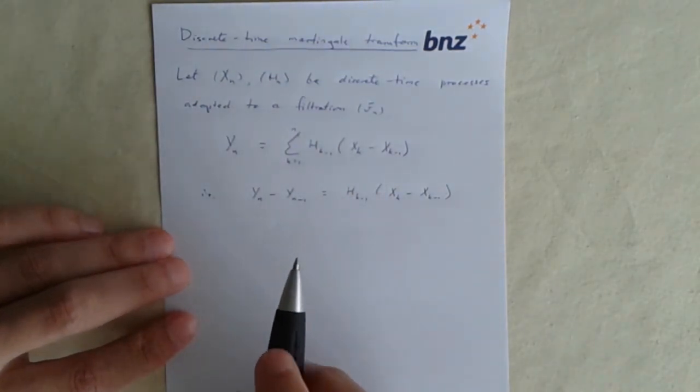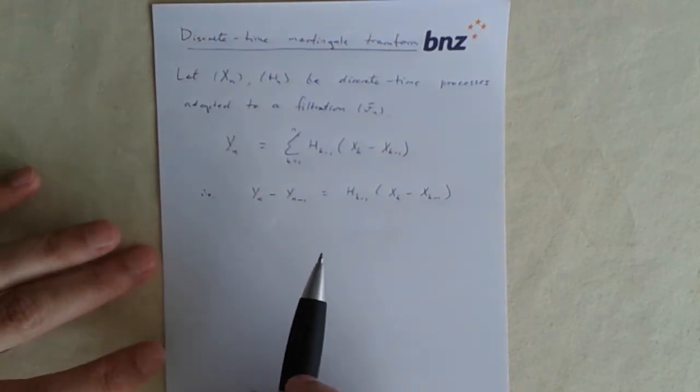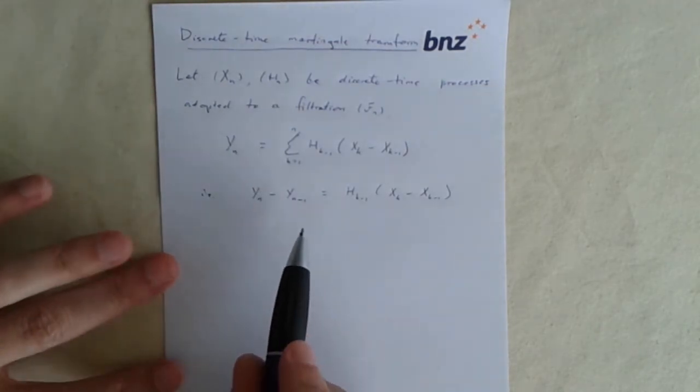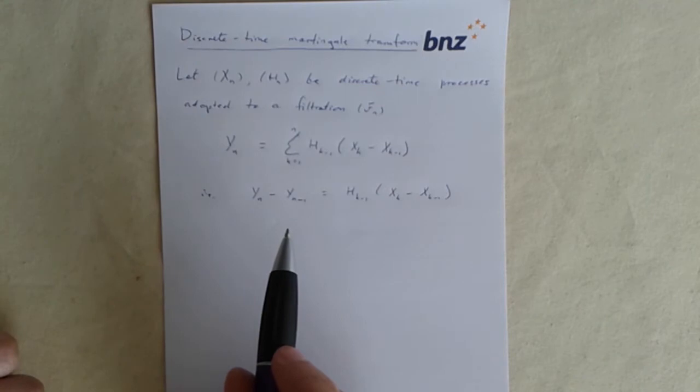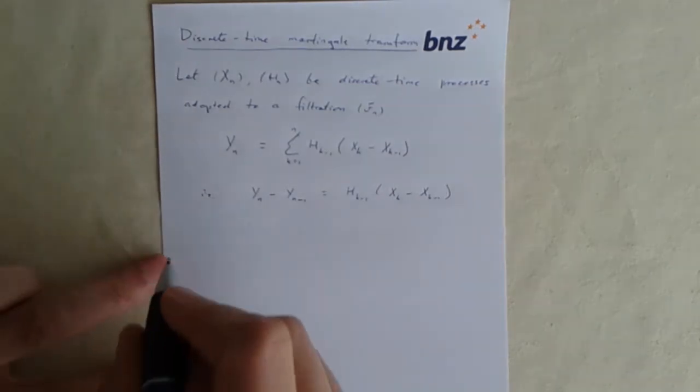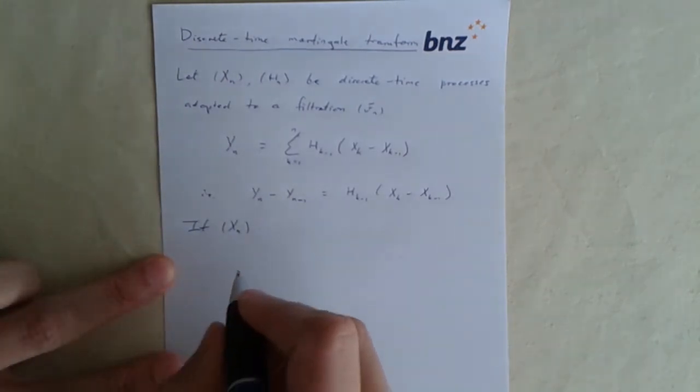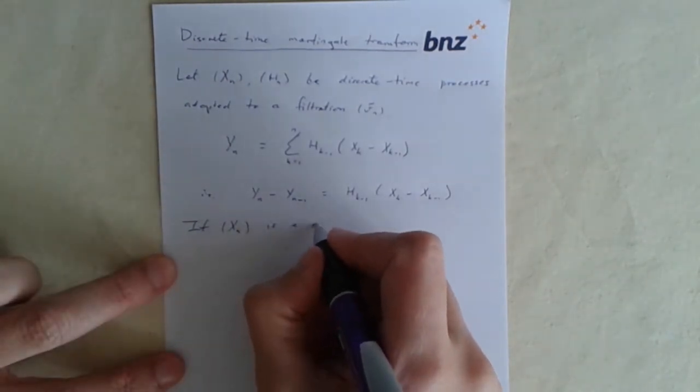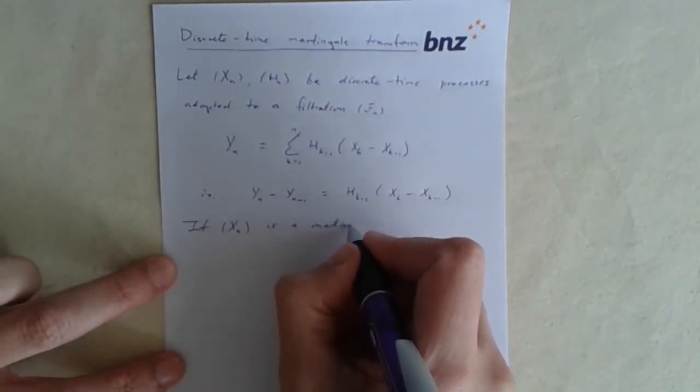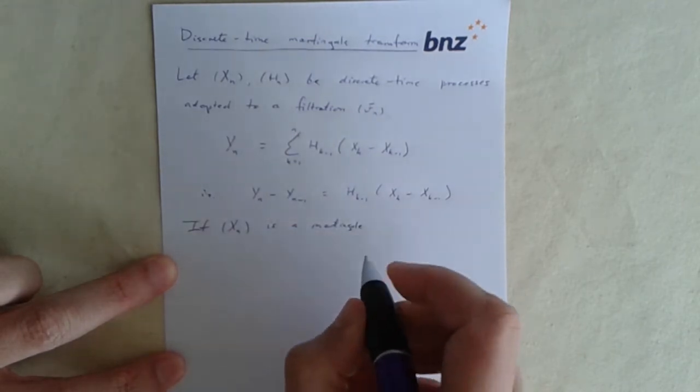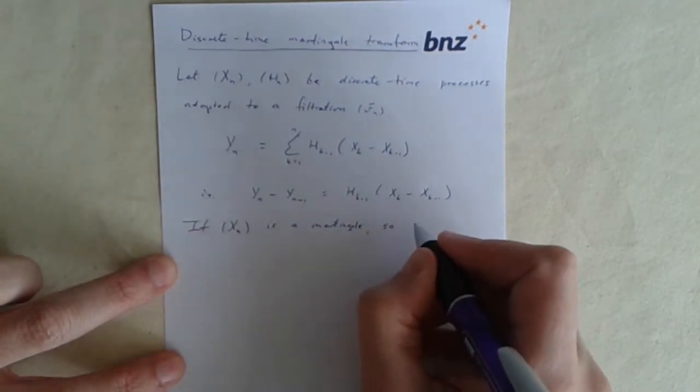So that's a discrete time Martingale transform. What's it got to do with anything being a Martingale? Notice I haven't mentioned here anything about any of these things being Martingales. The key thing is that if x is a Martingale, then so is y.